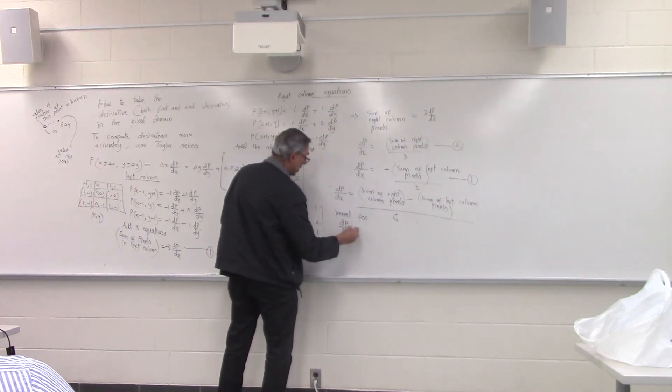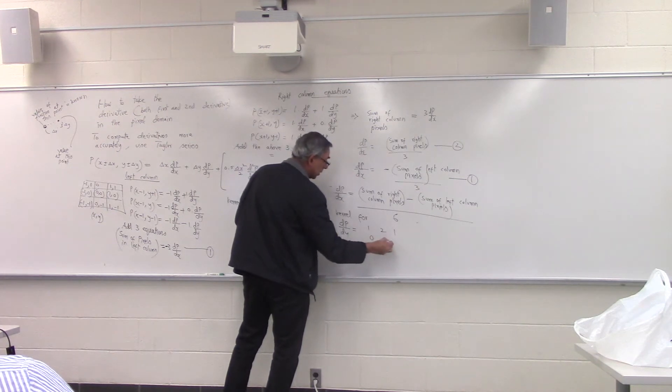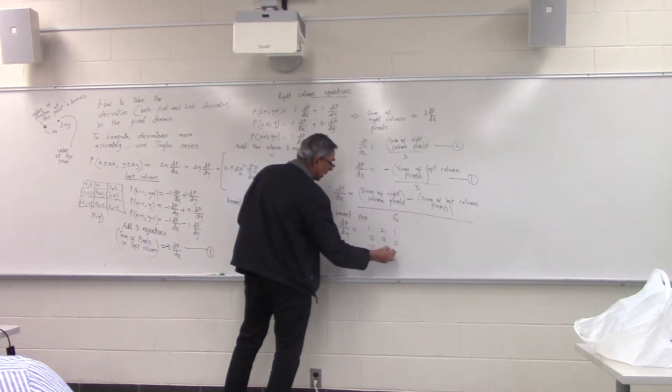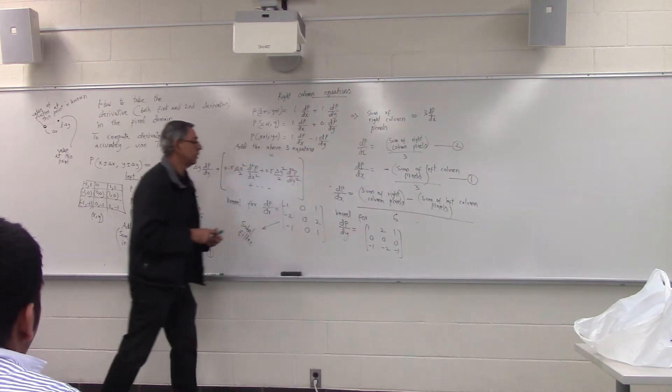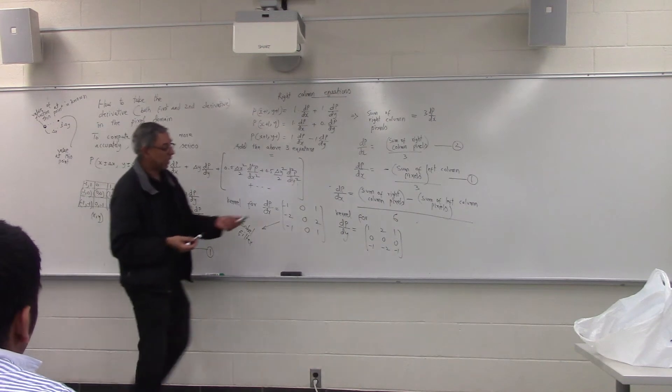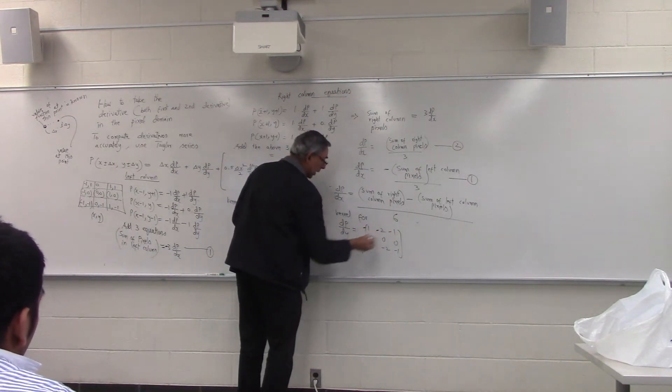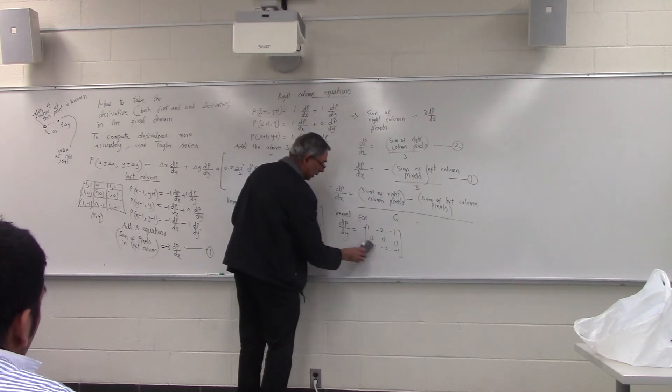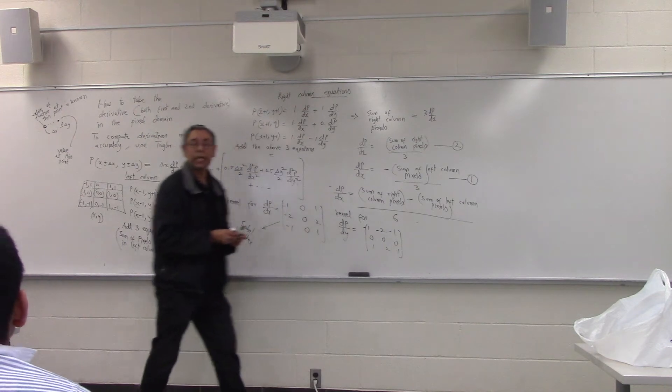dp over dy could be 1, 2, 1, 0, 0, 0, minus 1, minus 2, minus 1. Or you can put the minus 1 to be consistent. Let me put minus, minus, minus there and not put minus 1. So if we are going from half to bottom.